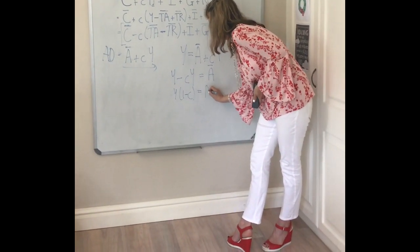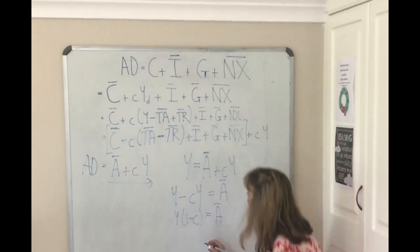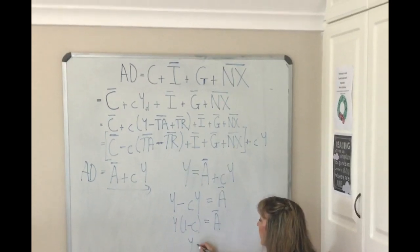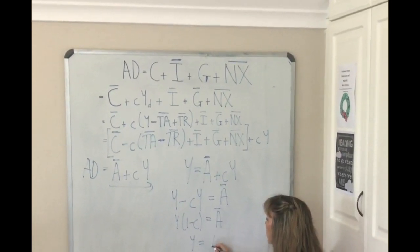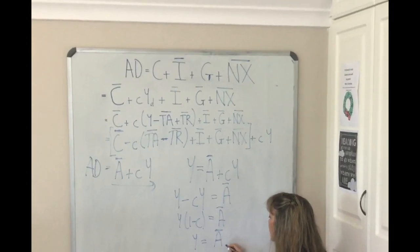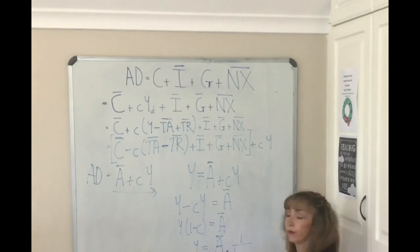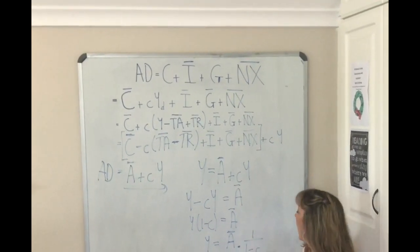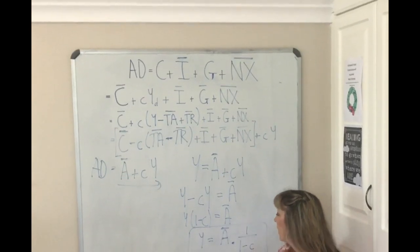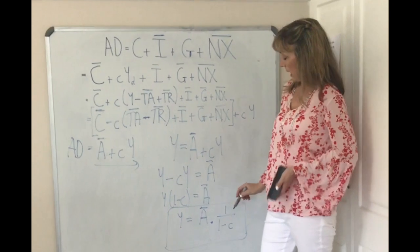That gives us the multiplier. We can see that income in equilibrium is equal to autonomous spending times 1 over (1 minus c). That is a very important expression — it is the simple Keynesian multiplier.